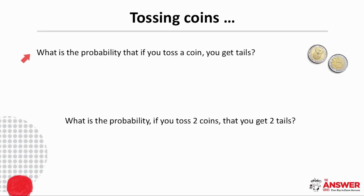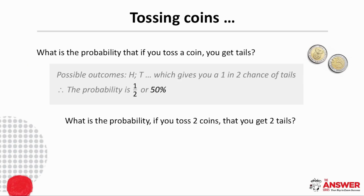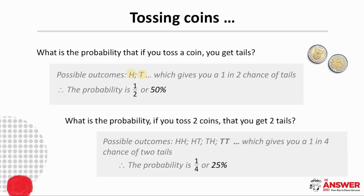Let's look now at the probability of getting tails when tossing a coin. There are two possible outcomes when tossing a coin, heads or tails, and so here we have a one in two chance, which means the probability of getting tails is a half or 50 percent. The next question asks what the probability is of getting two tails if you toss two coins. In this case, there are four possible outcomes: two heads, heads and tails, tails and heads, or two tails. There is a one in four chance of getting two tails, which means the probability is a quarter or 25 percent.